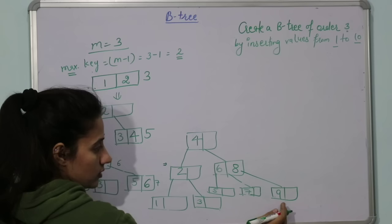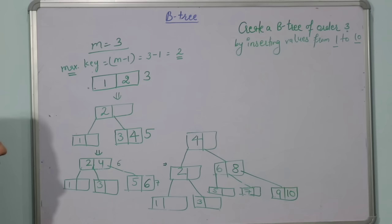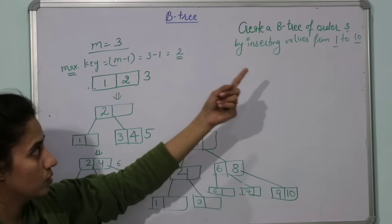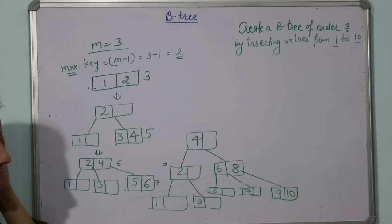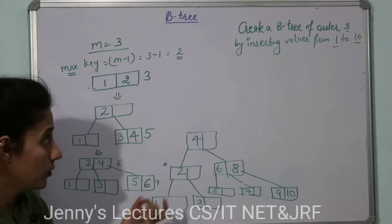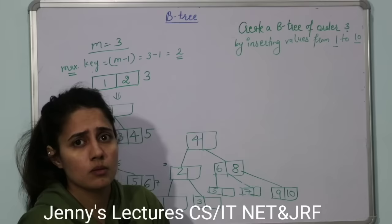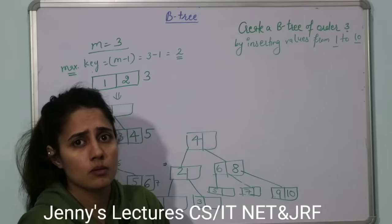Next element is 10. It will always be inserted in a leaf node. 10 would be inserted here. So this is the B-tree of order 3 with values from 1 to 10. In the next video, I will take one more example to create a B-tree, probably order 4 or 5 with values from 1 to 20 or random values or some alphabetic values. We will see that in the next video. Till then, bye bye, take care.